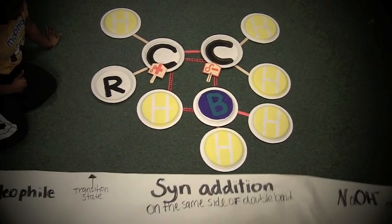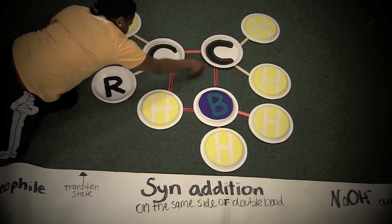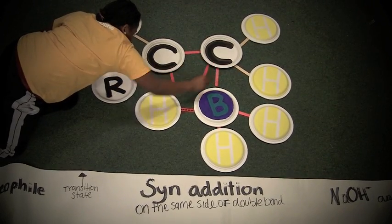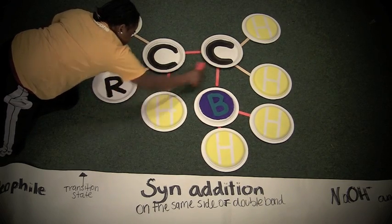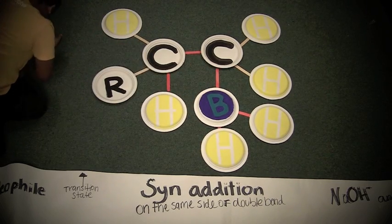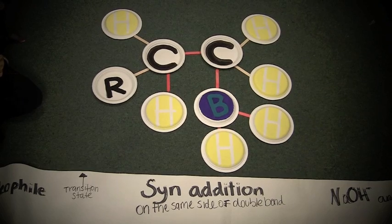These bonds will break. And as this happens the alkene carbons will go from sp2 hybridization to sp3 hybridization.